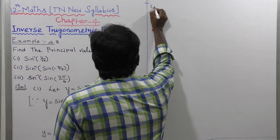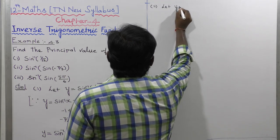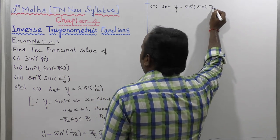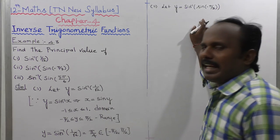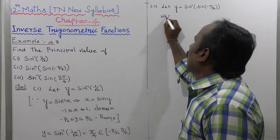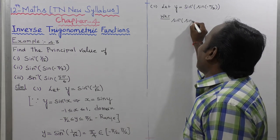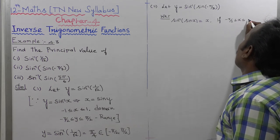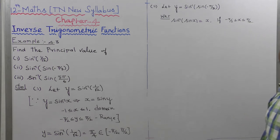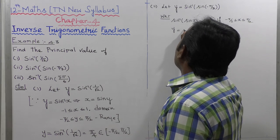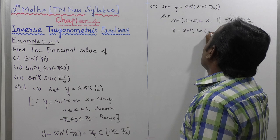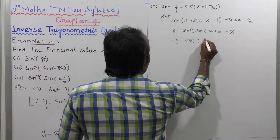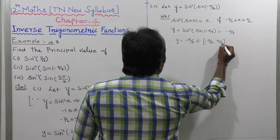Now for the second subdivision, let us consider y equal to sin inverse of sin of minus pi by 3. We use the formula: sin inverse of sin x equals x, if minus pi by 2 is less than or equal to x less than or equal to pi by 2 — that is, the first quadrant only. Since minus pi by 3 belongs to that range, y equals minus pi by 3, which belongs to the closed interval minus pi by 2 to pi by 2. Second subdivision completed.